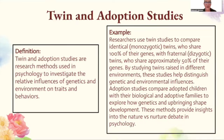Twin and adoption studies are research methods used to investigate the relative influences of genetics and environment on traits and behavior. Twin studies compare identical monozygotic twins — who share 100% of their genes — with fraternal dizygotic twins — who share approximately 50%. By studying twins raised in different environments, these studies help distinguish genetic and environmental influences. Adoption studies compare adopted children with their biological and adoptive families to explore how genetics and upbringing shape development.